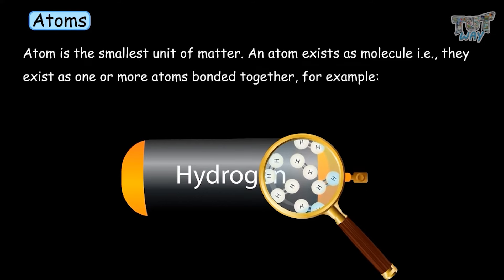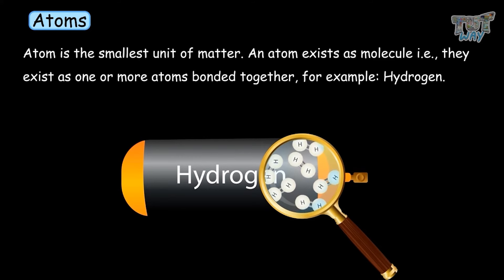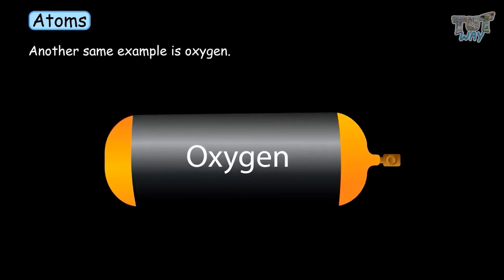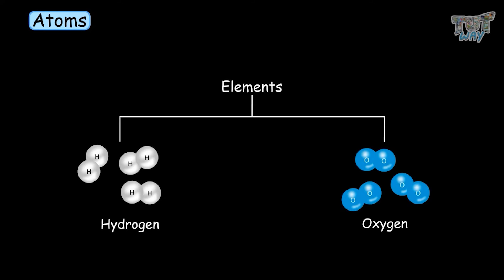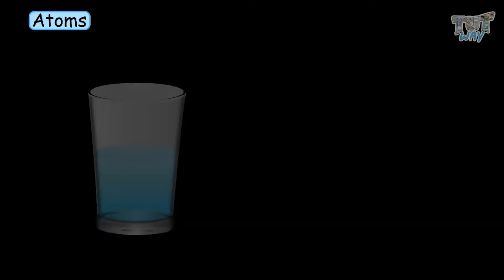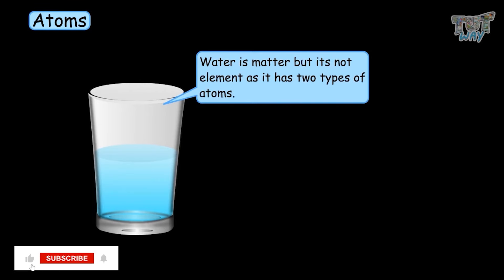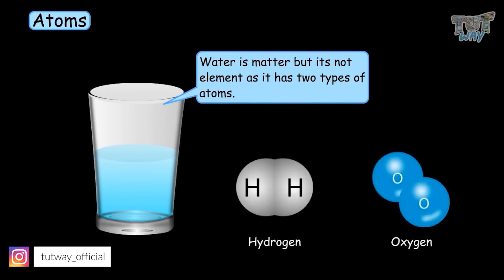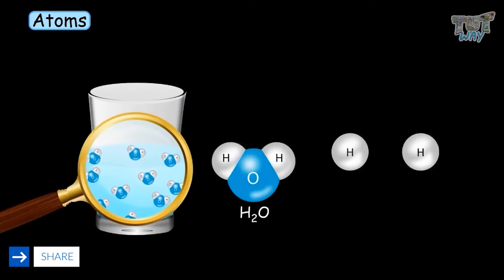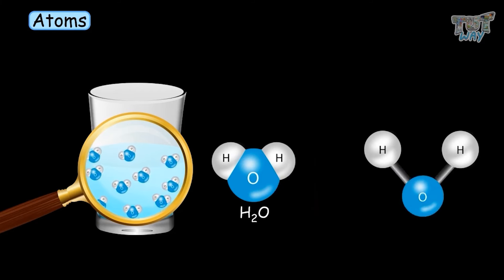For example, hydrogen exists as molecules of hydrogen, where each molecule of hydrogen has two atoms of hydrogen bonded together. Hydrogen and oxygen are elements because they have the same types of atoms. But some types of matter may not necessarily have the same atoms — for example, water is matter but it is not an element, as it has two types of atoms: hydrogen as well as oxygen, and it exists as H2O — two atoms of hydrogen and one atom of oxygen in each molecule of water.